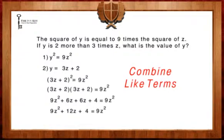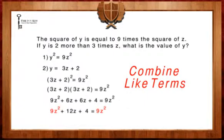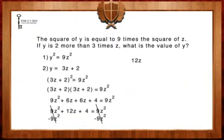Once again, we're going to want to combine like terms of 9z squared and 9z squared by subtracting 9z squared from both sides of the equation. When we do that, we're left with 12z plus 4 equals 0.